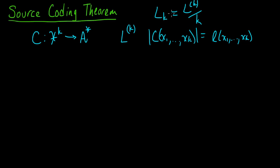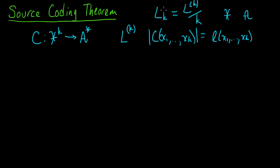L_K is the expected number of code symbols per source symbol — it's L^K divided by K. L_K measures how much compression we're achieving; you can think of it as the compression ratio. It's not exactly the compression ratio necessarily, because you may be using a different size of source alphabet than code alphabet. But if both are binary, then L_K is in fact the expected compression ratio of your code.